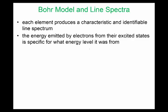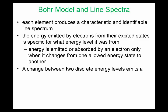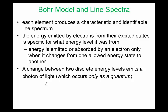Each element produces a characteristic and identical line spectrum according to its electron arrangement. The energy emitted by electrons from their excited states is specific to what energy level the electron came from. Energy is emitted when an electron goes from a higher energy state to a lower energy state, and energy is absorbed when an electron moves from a lower to a higher energy state.